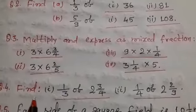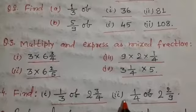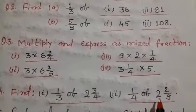Question number 4 is find 1 by 3 of 2 and 3 by 4. And second is 1 by 4 of 2 and 2 by 9.